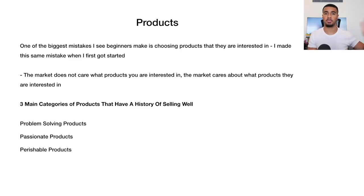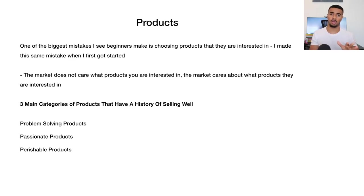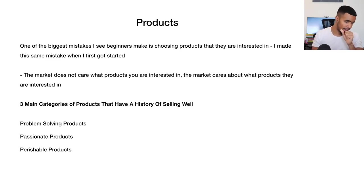The market will always tell you what it's interested in, not vice versa — you can't tell the market what they want. Starting off, you want to make sure you don't make that same mistake. Don't randomly pick products based on personal preference. I am a huge believer that you should choose what products to sell and test based on data and research. That's how I do things, that's how I train my team, and that's how I've gotten results — not by winging my product research.